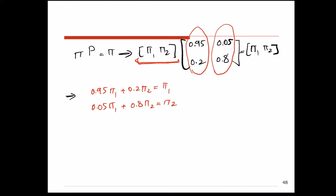We have two unknowns — pi 1 and pi 2 — and we need two independent equations. As stated in the previous video, when we set up the equations from pi·P = pi, one equation is always dependent on the rest. So we can drop any one of them and add the equation that always holds for any stochastic system: pi 1 plus pi 2 equals 1.